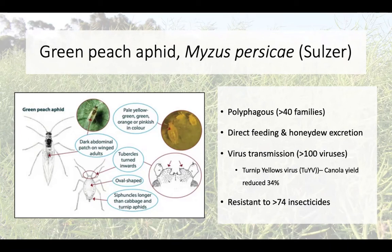Green peach aphid is highly polyphagous, feeding on over 40 families of plants — which may explain why it's so commonly found around the country. It causes damage through direct feeding and excretion of honeydew, which can cause sooty molds. Just one of the associated viruses, turnip yellows virus, can reduce canola yields by over a third. It has also become resistant to insecticides in over 74 different groups globally, making it a huge problem and highlighting why we should focus on alternative control methods.